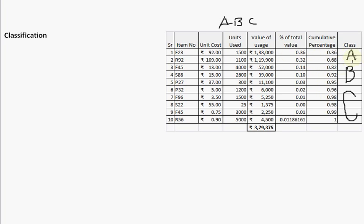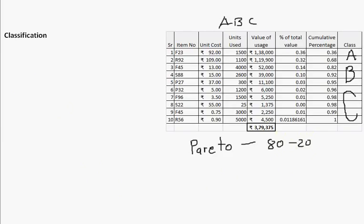A category items have high value of usage, so you must control them strongly. C category items have low value of usage — numerically they're many, but value is not high, so we might not focus as much on them. Inventory management activities are typically focused on A class items — the vital few. The trivial many receive less attention. This A, B, C approach is also based on the Pareto principle, also called the 80-20 rule: you focus attention on the few that contribute a lot.